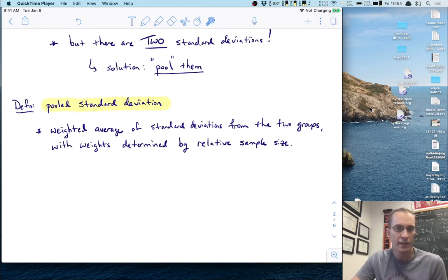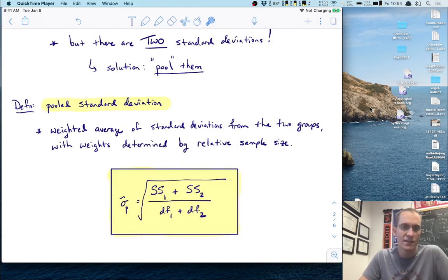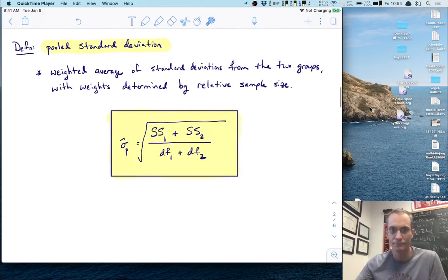A pooled standard deviation is defined as the weighted average of the standard deviations from the two groups, where the weights are determined by the relative sample size. There's a very nice formula that allows us to get this weighted average. We can compute this pooled standard deviation, denoted as sigma hat with a p subscript, by taking the square root of SS1 plus SS2 divided by df1 plus df2.